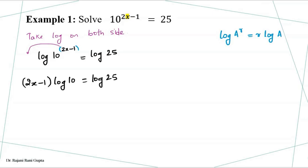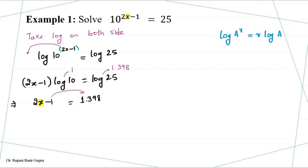We can use a calculator to get the values of log of 10 and log of 25. Log of 10 comes out to 1, and log of 25 comes out to 1.3979, which we can write as approximately 1.398. So our equation becomes: (2x minus 1) multiplied by 1 equals 1.398.